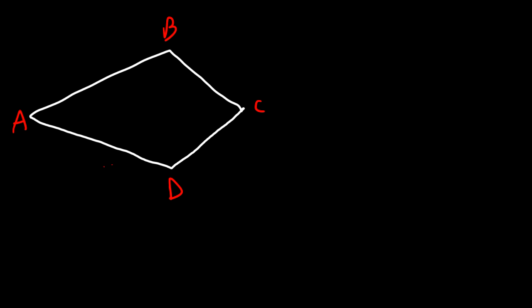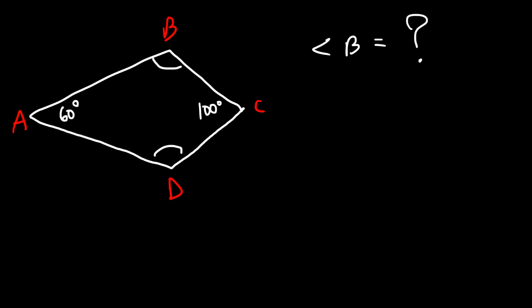Let's say angle A is 60 degrees and angle C is 100 degrees. What is the measure of angle B and angle D? Feel free to try this problem. Recall that angle B is congruent to angle D — they lie on the short diagonal and are equal to each other.